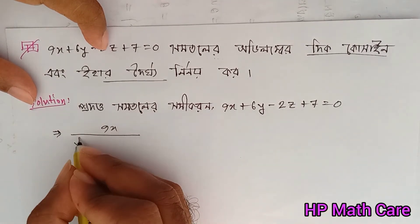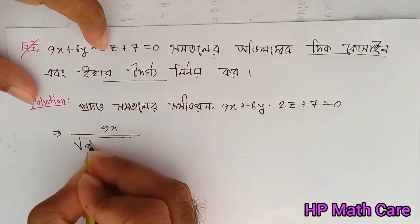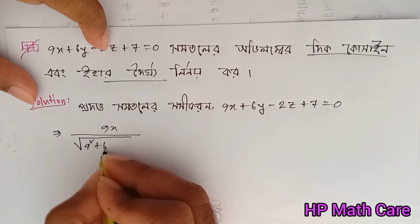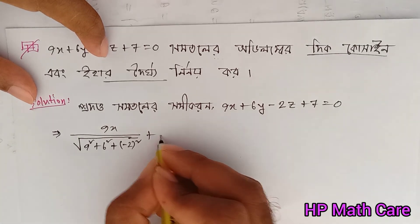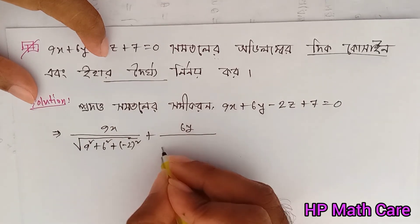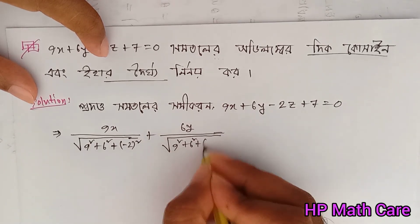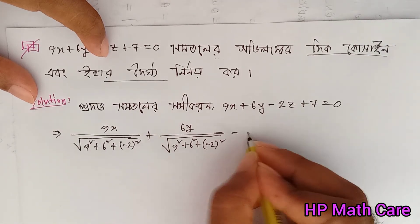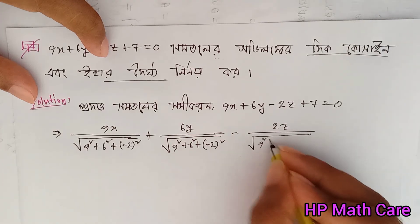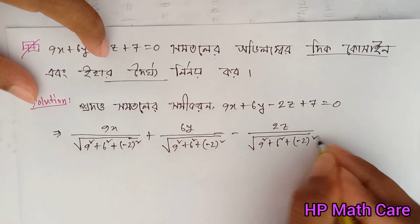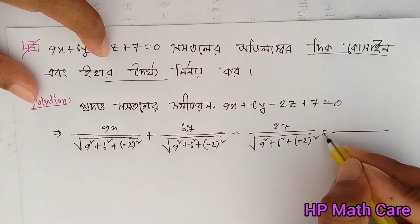9x by root of (x² plus y² plus 0²) plus 9² plus 6² plus minus 2². Plus 6y by root of (9² plus 6² plus minus 2²). Minus 2z by root of (x²). y² plus 0². What do we have to do? Minus 1 square, root of (1² plus y² plus 0² plus 0²).